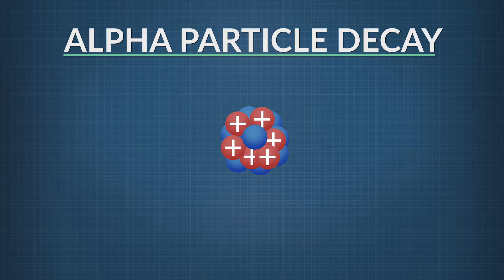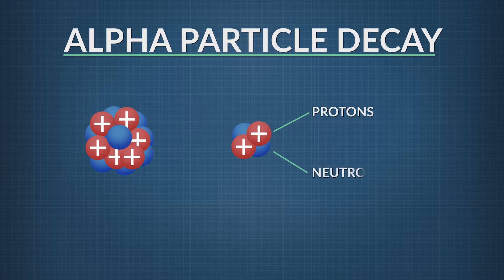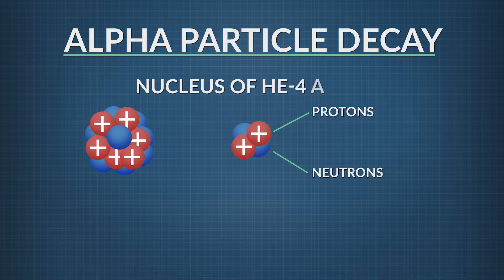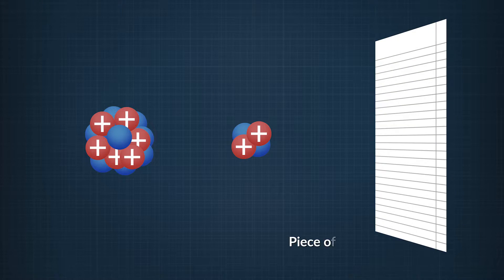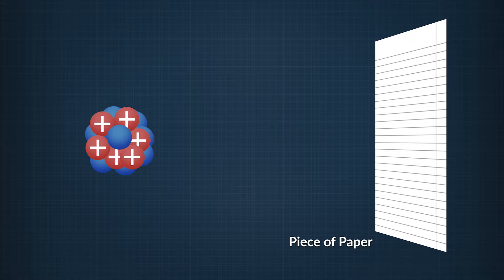Alpha decay occurs when a nucleus releases an alpha particle — two protons and two neutrons bound together, equivalent to the nucleus of a helium-4 atom. Alpha particles have a plus-2 charge. They're the slowest and least penetrating form of nuclear radiation, and a piece of paper can block their path.